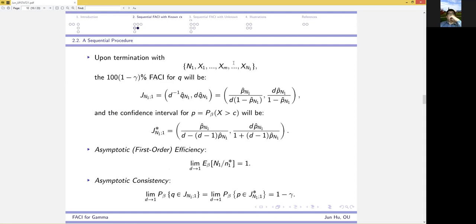Upon termination with the acquired data, we can construct the fixed accuracy confidence interval for q and then for p accordingly. Our procedure enjoys the following two crucial properties, namely the asymptotic efficiency and asymptotic consistency.